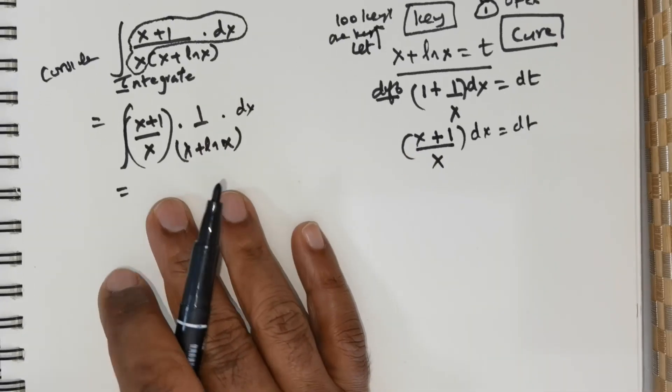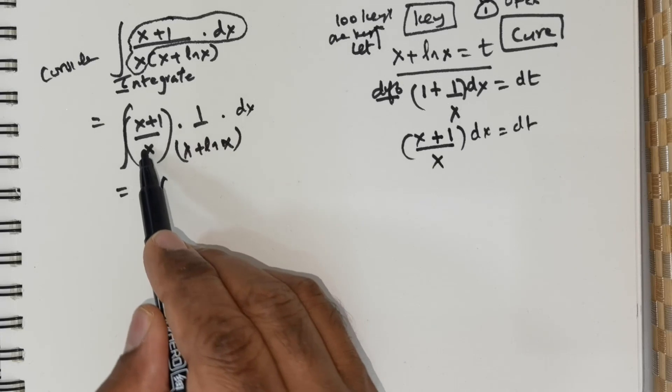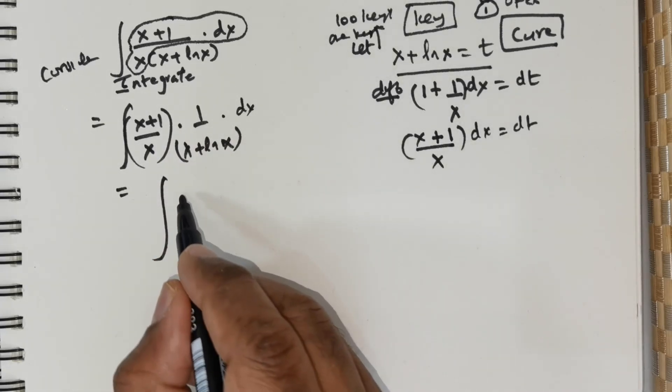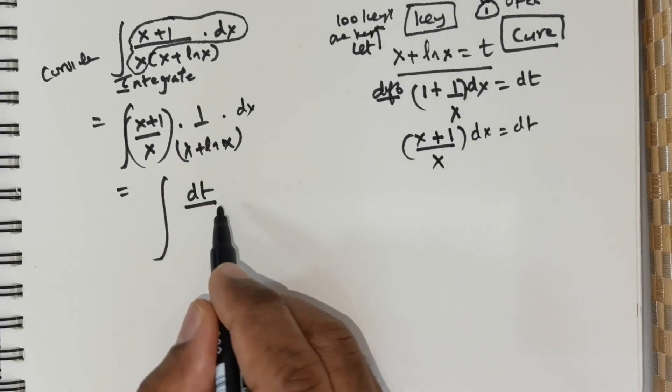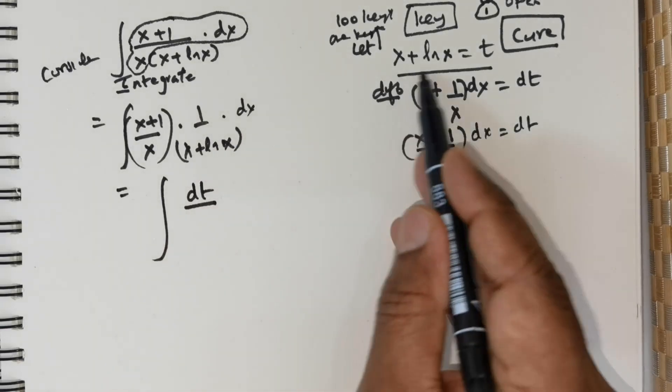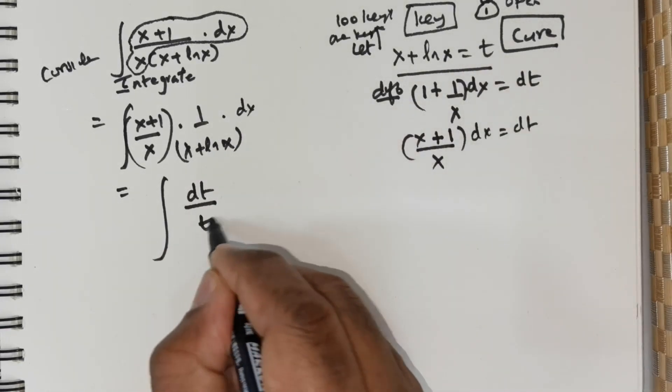So this is equal to, in place of (x + 1/x)dx, I am going to substitute dt. What is this?